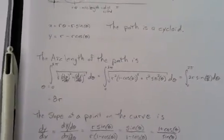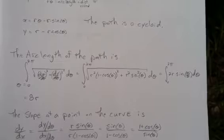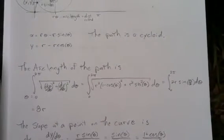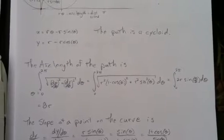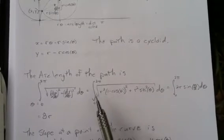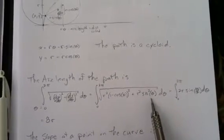Alright, arc length continued. So, cleaning up my arc length formula here. I end up with this equation when I take the derivatives and square them.